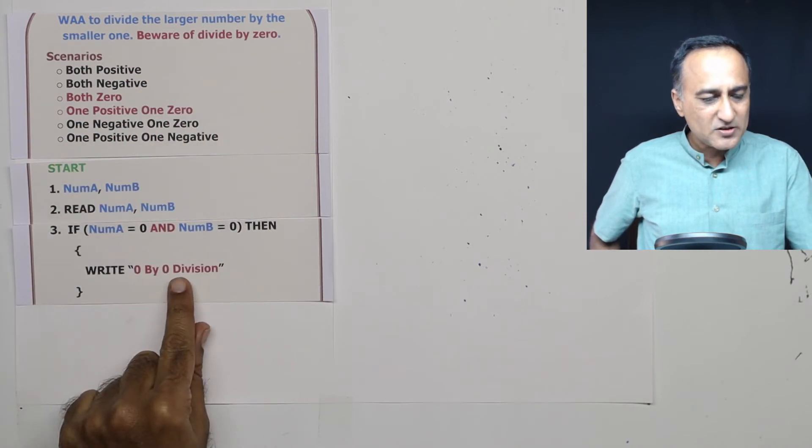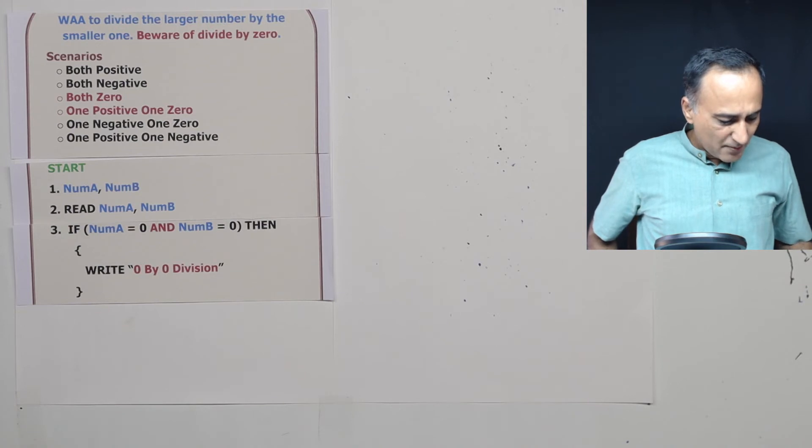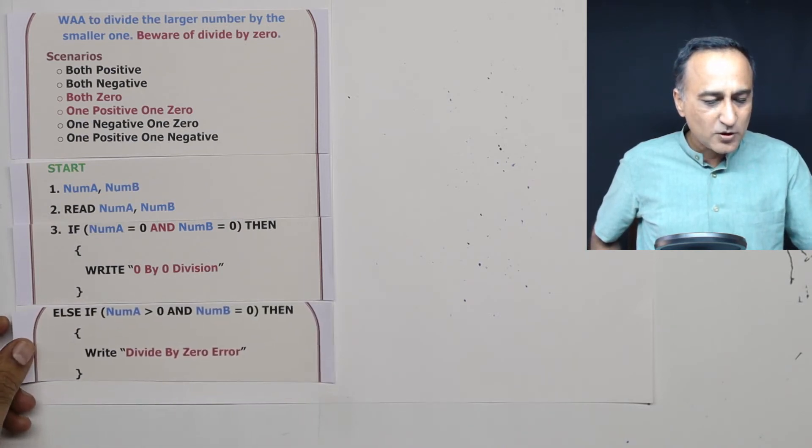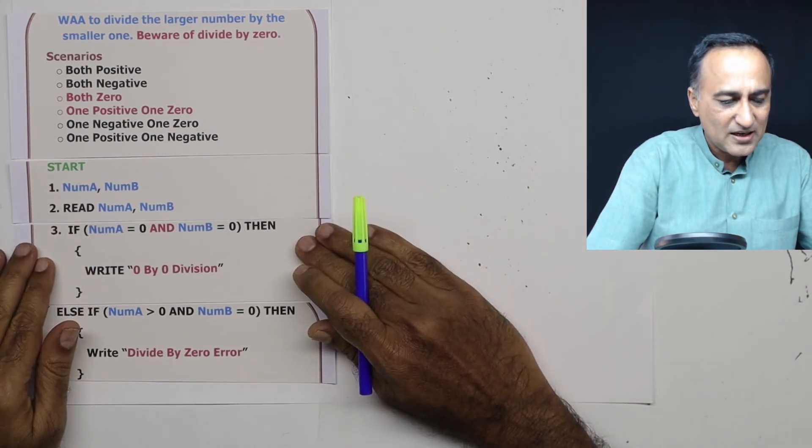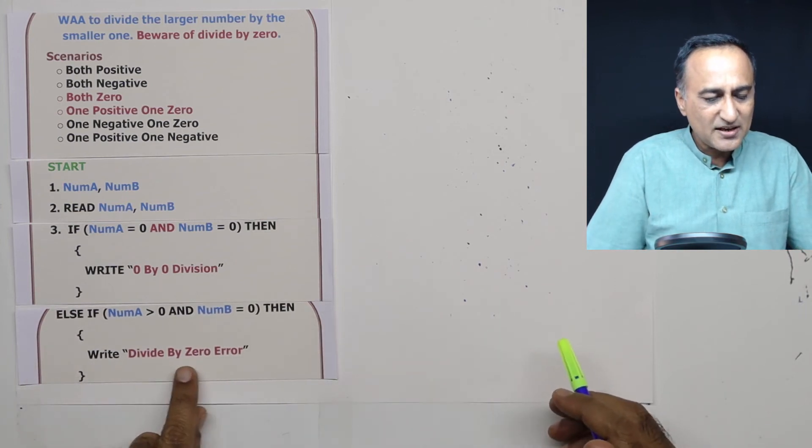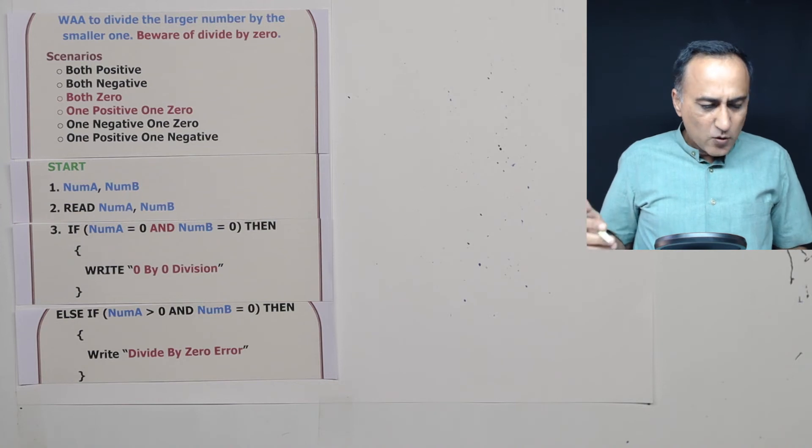Once we read numA and numB, the first condition is if number A is equal to 0 and number B is equal to 0. This is a problem. I am going to write 0 by 0 division and I am going to halt. Then what I am going to do here is I am going to now check if number A is greater than 0 and number B is equal to 0. This is also a problem case.